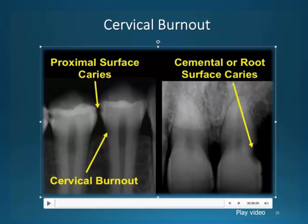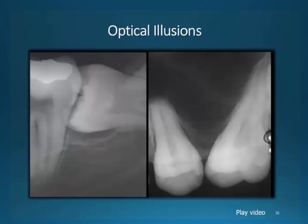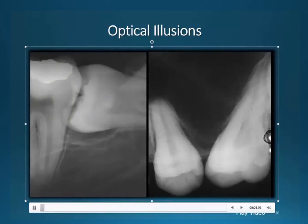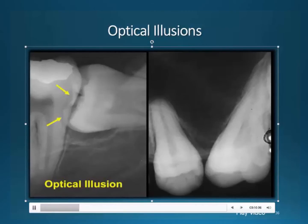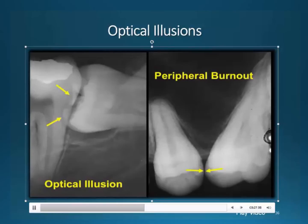When studying the radiographic image of teeth, you need to be aware of two artifacts of imaging. First, when the images of two very dense objects are superimposed, the image of one appears to be outlined with a radiolucent band. This radiolucency does not represent a loss of tooth structure but is an optical illusion. Second, two objects physically in contact will appear to be separated by a radiolucency. This is referred to as peripheral burnout, evident because the narrow point of contact between the objects allows more x-rays to pass than the adjacent thicker regions of teeth.